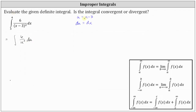Using the equation u equals x minus three: when x equals three, u is equal to three minus three, or zero. And when x is equal to four, u is equal to four minus three, or one. Analyzing the integral with respect to u, notice how we have discontinuity at u equals zero, which means we need to write this as a limit.